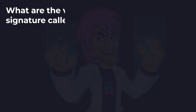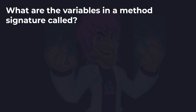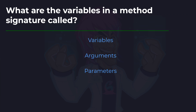Next up: what are the variables in a method signature called? Are they variables, arguments, or parameters? In our example this was the string full name — the pieces of variable information that can go into a method. And the answer is parameters.